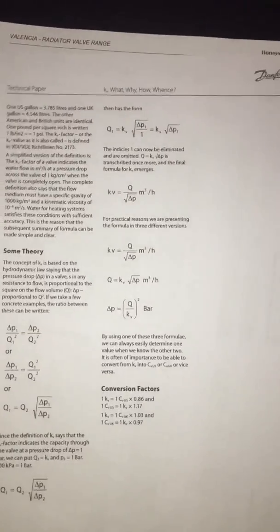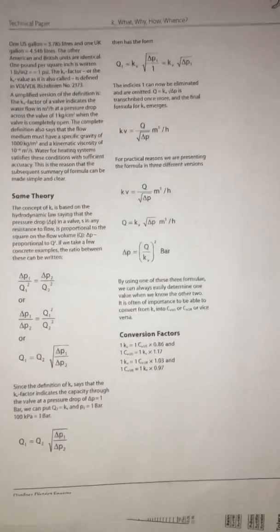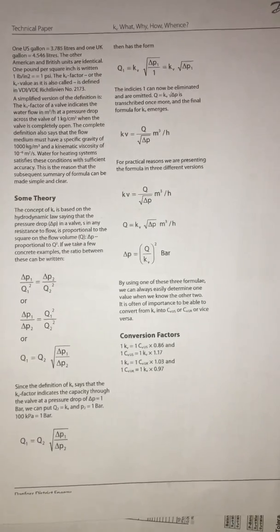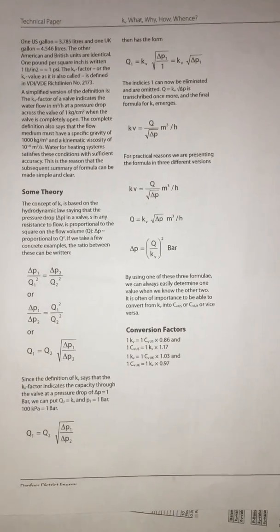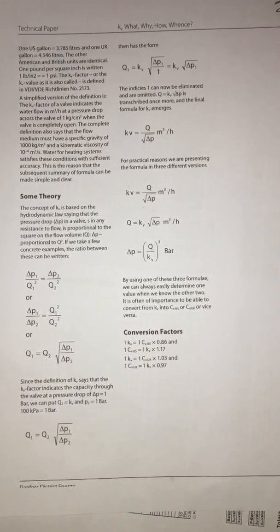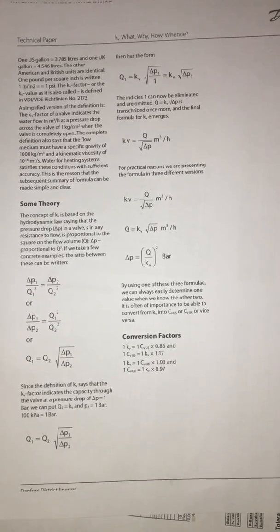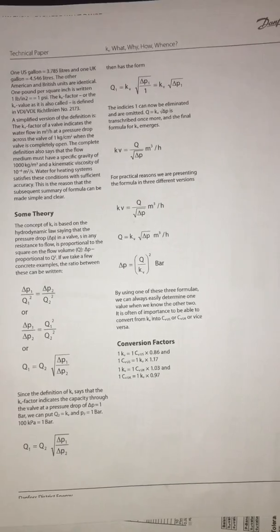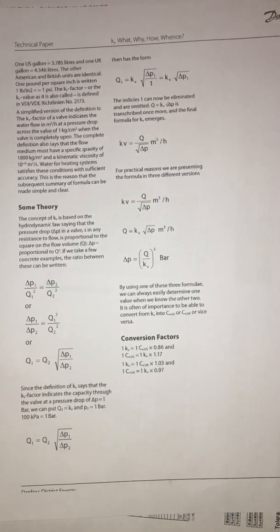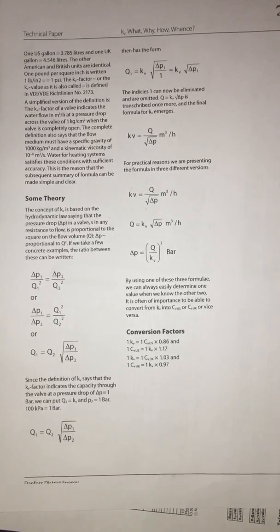But first just a little bit about flow coefficient. Flow coefficient will tell us how much flow in cubic meters per hour the valve will take to lose one bar of pressure. This is useful because there is a square law relationship between flow rate and pressure loss. So if we double the flow rate from a valve we will quadruple the pressure loss, or if we halve the flow rate the pressure loss will reduce to a quarter of its previous value.